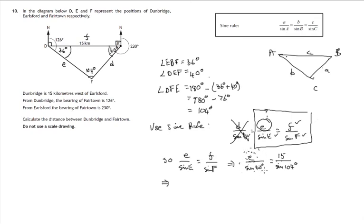So if I multiply the left-hand side by sine 40, that divide by sine 40 disappears. And if I multiply this fraction by sine 40, the sine 40 will appear on the top of the fraction.